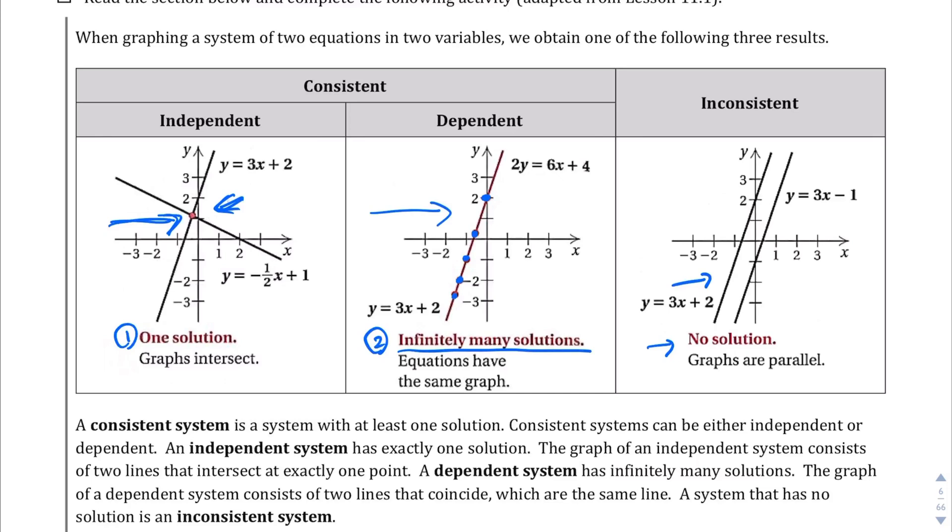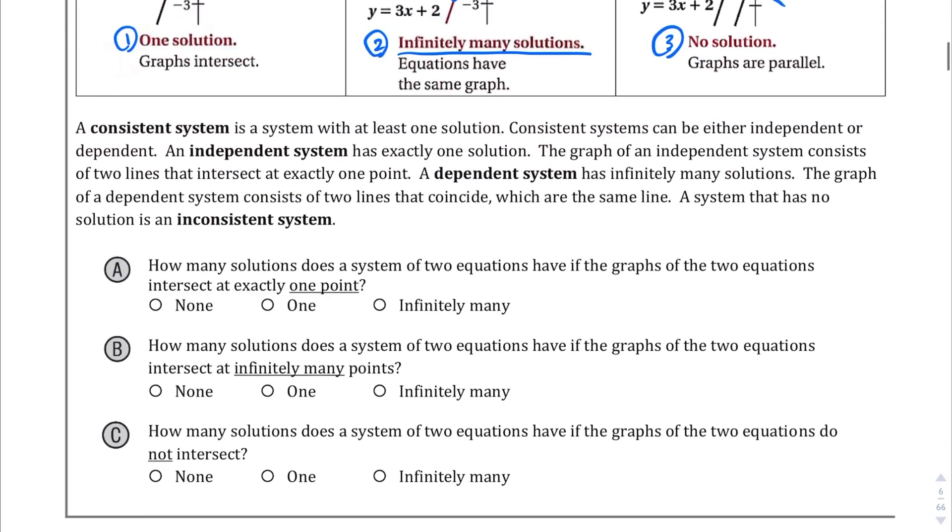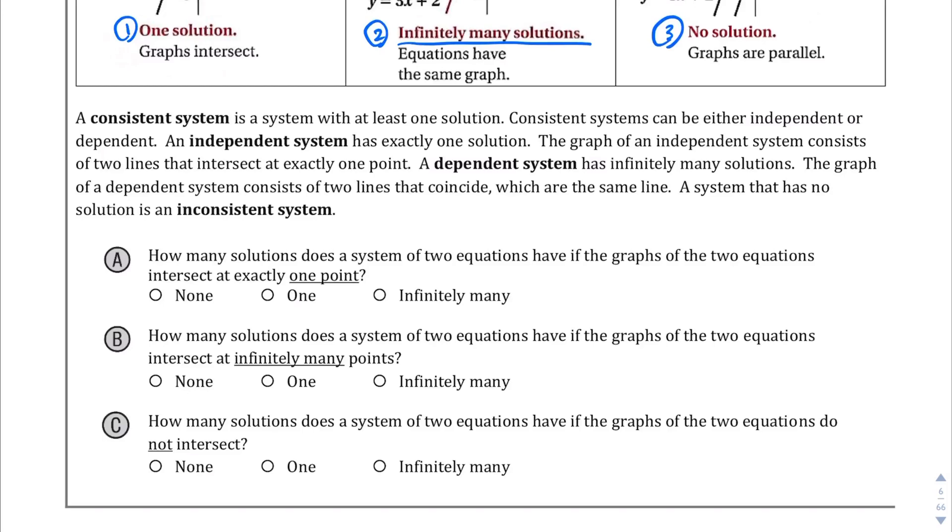The third type is one with no solution, when you have two lines that are parallel to each other, and because they're parallel, they will never intersect at any point. So, those are the three types, and here, questions A, B, and C, they just ask you, what does it mean when you have two equations that intersect exactly at one point? Well, you only have one solution. Question B, how many solutions when you have infinitely many points? Well, you have infinitely many solutions. Question C, how many solutions does the system have if the two equations do not intersect? Well, none. They're parallel. So, pretty simple to understand, but like most things, we'll get a better understanding as we do more of these problems.